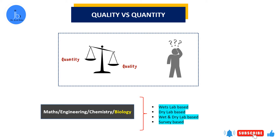Depending on the kind of experiments you perform — whether statistical, computational, or review-based — timelines will vary, as will the journals you submit to. Impact factors, journal quality, and data quality are very significant. You cannot always compare: that faculty is getting 30 papers and why am I only getting 3. With 3 quality papers, you can get a lot of achievements and opportunities if your data and publications are good, and maybe you are from a different background.